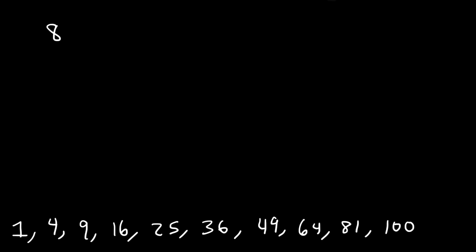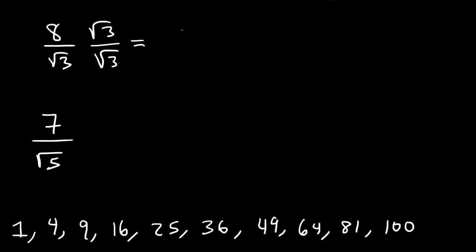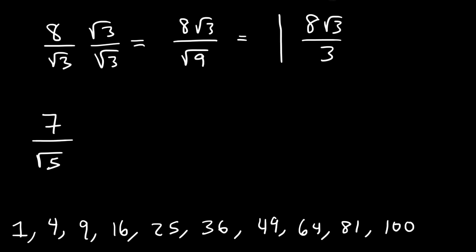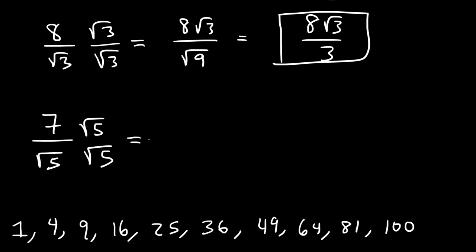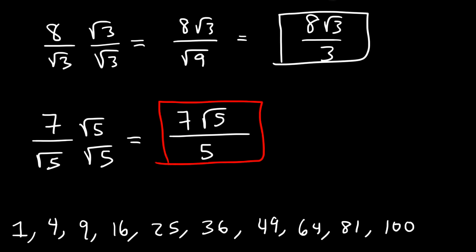For practice, try two more examples. For the first one, multiply the top and bottom by the square root of 3. The square root of 3 times the square root of 3 is the square root of 9, which is 3. For the last one, multiply by the square root of 5. The square root of 5 times the square root of 5 is just 5 — the square root symbols cancel.